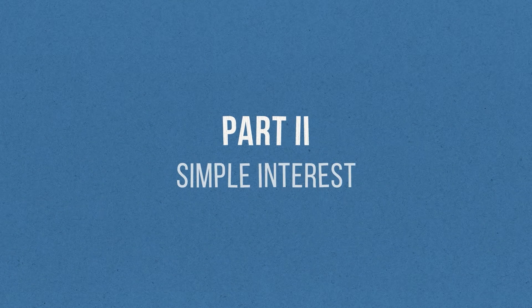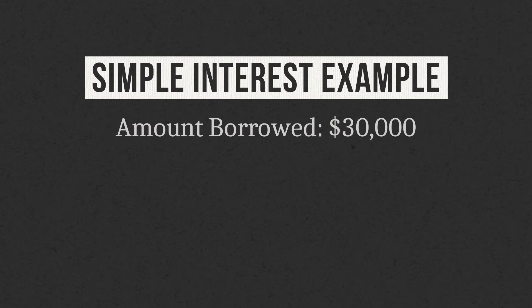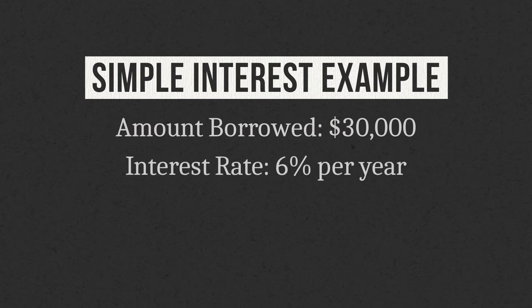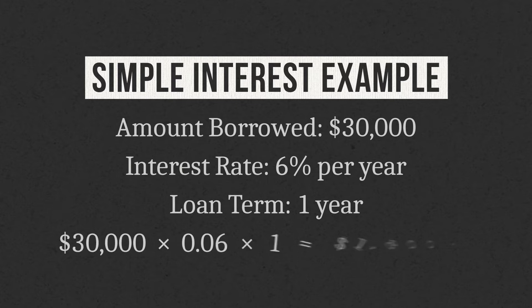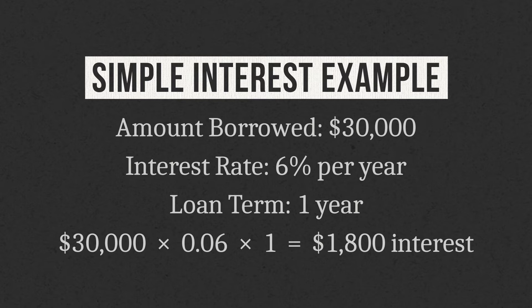Now that we're on the same page when it comes to the concept of interest in general, let's talk about simple interest, starting with an example. Let's say I borrowed $30,000 to buy a new car, the interest rate on my loan was 6% per year, and I was going to pay that loan back in full with interest one year from today. I start with the amount borrowed — $30,000 — multiply by the interest rate of 6% per year, then multiply by the length of time, one year. The result is $1,800 in simple interest.